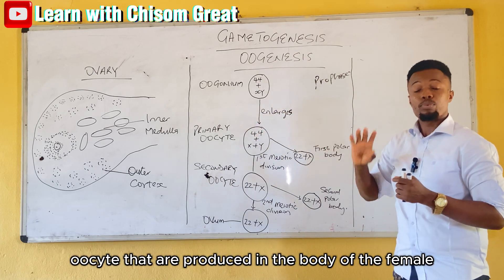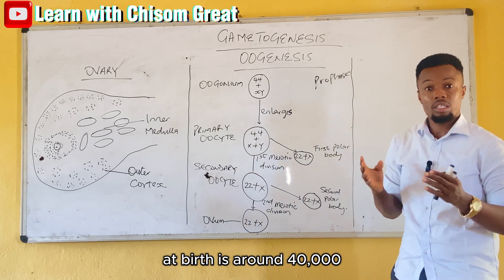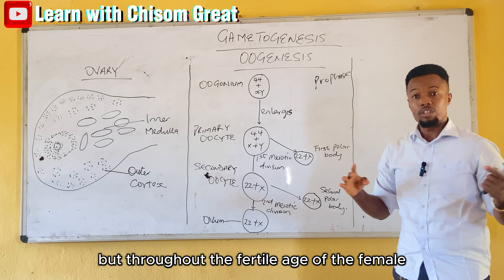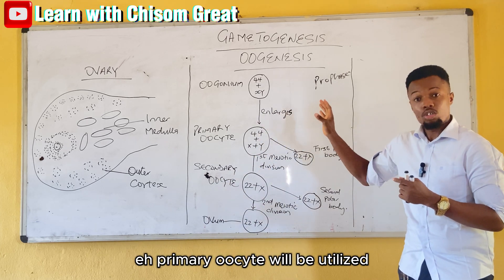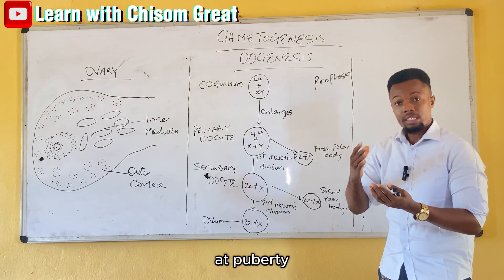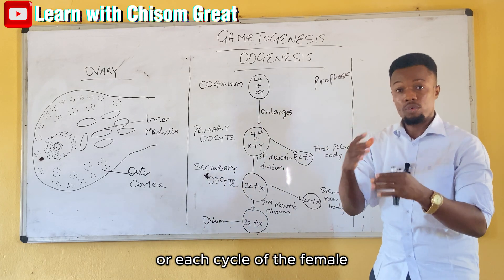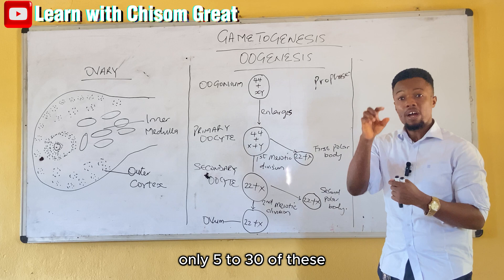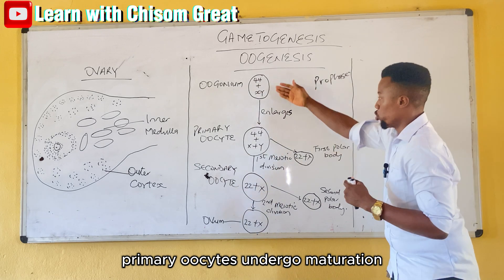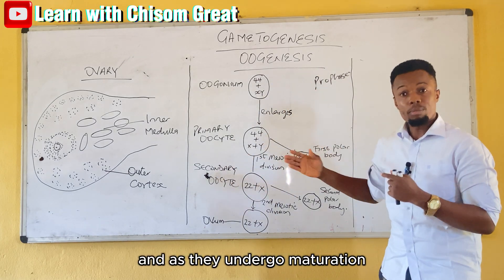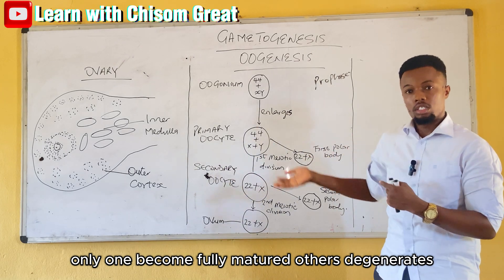The number of primary oocytes produced in the body of the female at birth is around 40,000. But throughout the fertile age of the female, only about 400 of these primary oocytes will be utilized. At puberty, only 5 to 30 primary oocytes undergo maturation each menstrual cycle, and of those, only one becomes fully mature. The others degenerate.